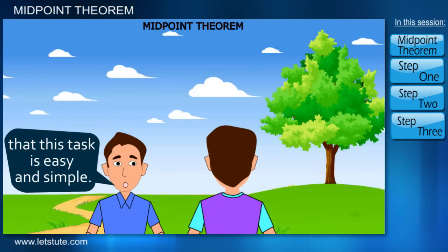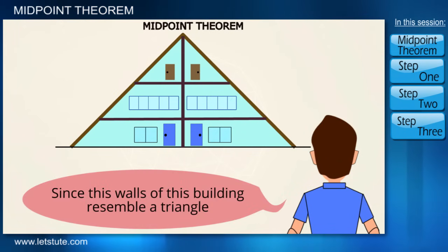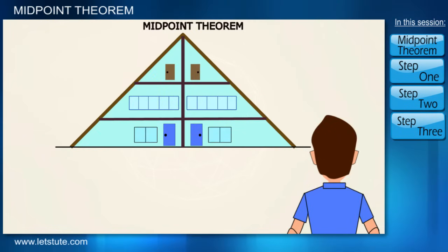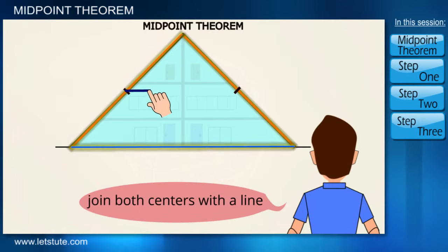Fine, don't worry, consider it done. And let me assure you that this task is very easy. How? Let me explain. Since these walls of the building resemble a triangle, so first of all we shall take the center of both the sides of this triangular wall except the base and then join both the centers with a line.